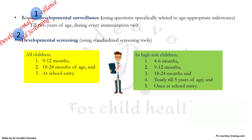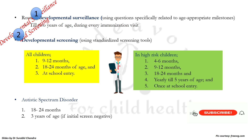In high-risk children, developmental screening using standardized tools should be done at 4-6 months, 9-12 months, 18-24 months, then yearly till 5 years of age, and once at the time of school entry. It is also essential to remember that children diagnosed with global developmental delay should be screened for autistic spectrum disorder, which is done between 18-24 months, and if negative, repeated again at 3 years of age.